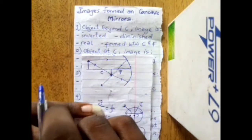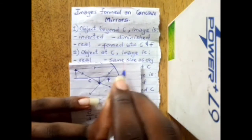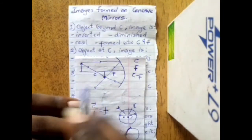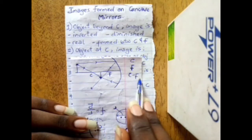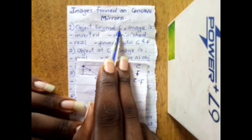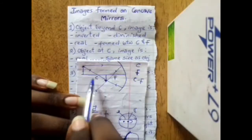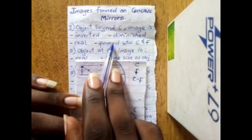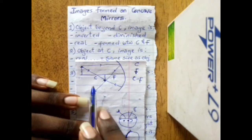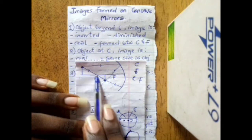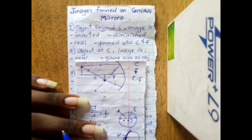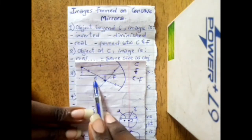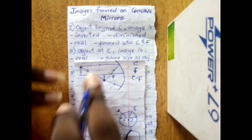When an object is placed beyond C, the rays reflected on the mirror bounce back to form an image. This image is inverted, it is a real image, it is diminished — smaller than the object — and it is formed between C and F.